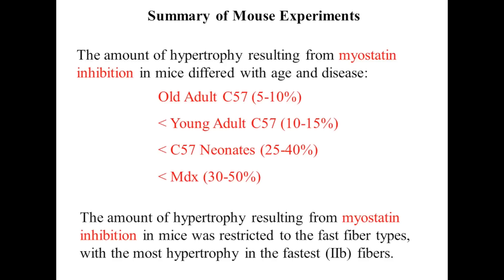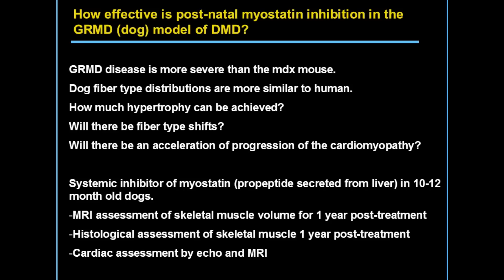This is an important lesson because some may be disappointed by what's been heard from myostatin inhibition in healthy volunteers — on the order of maybe 5% on average between different studies made public. But bear in mind that in normal, unaffected mice as they get older, we also don't see much hypertrophy. Yet we see tremendous hypertrophy in the dystrophic setting. So we wanted to move to dogs because dogs are a much better model of Duchenne muscular dystrophy.